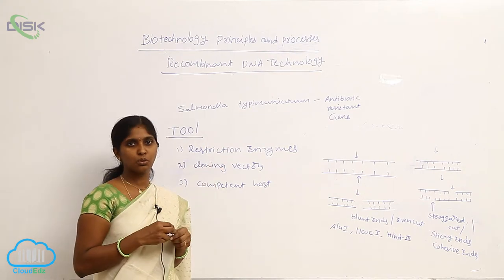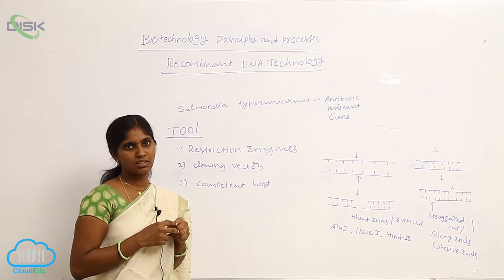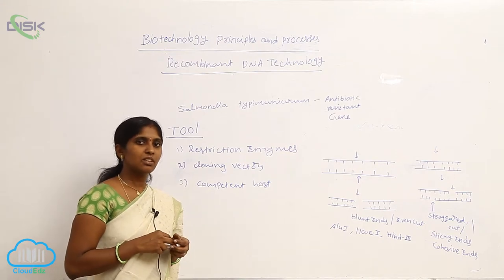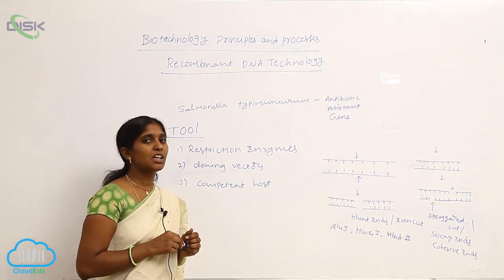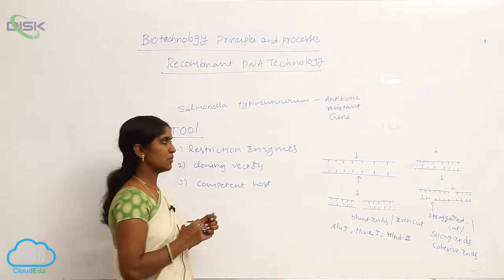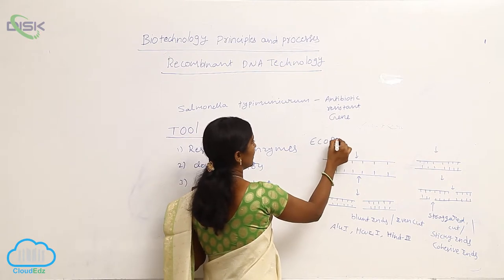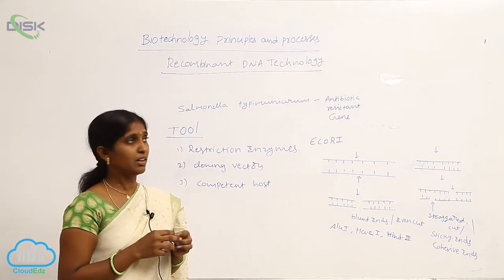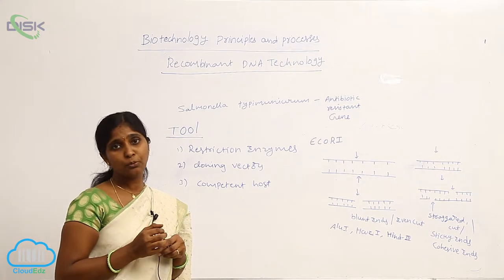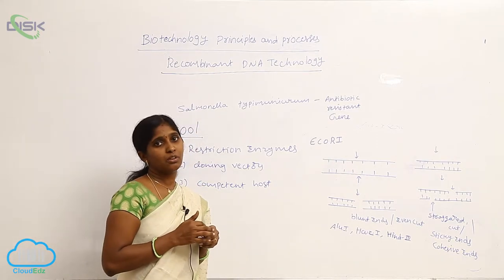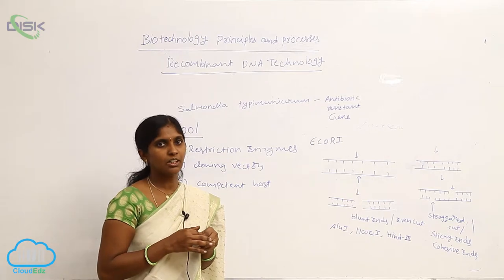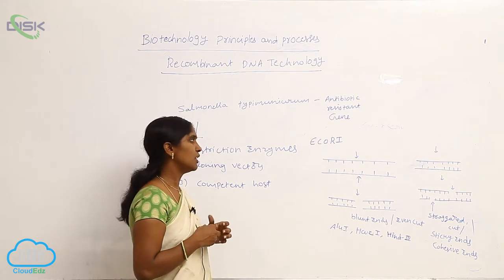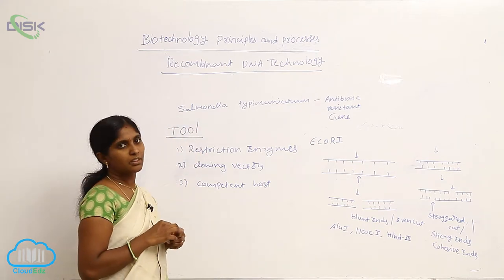Restriction endonucleases belong to the class of endonucleases. The scientist Nathans discovered restriction enzymes. The first identified restriction endonuclease enzyme is EcoRI. Till today, approximately 400 restriction enzymes have been isolated from different source organisms — approximately 230 living organisms have given 400 types of restriction endonucleases. Nathans received the Nobel Prize for this work.